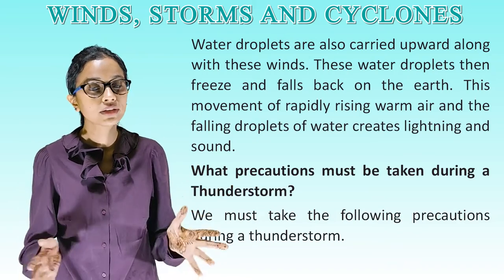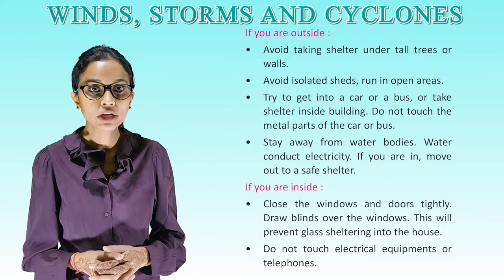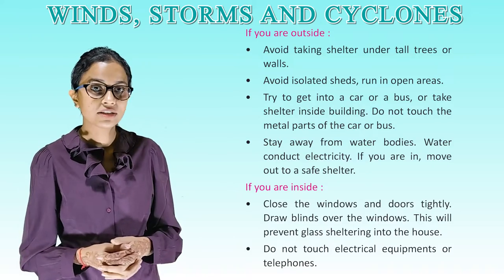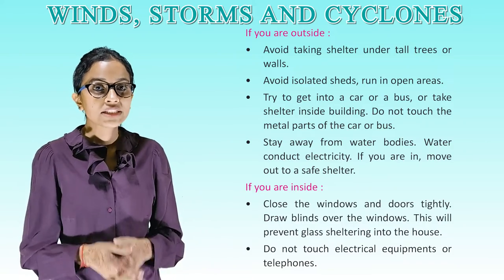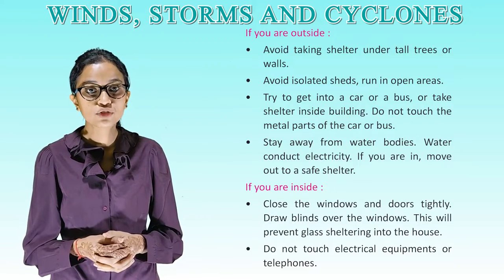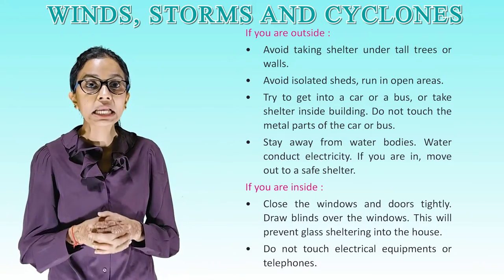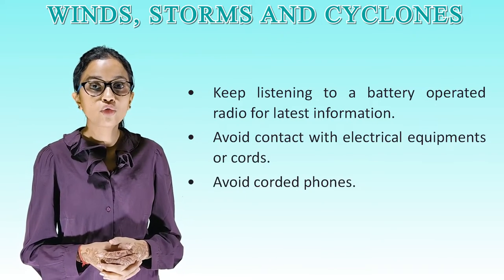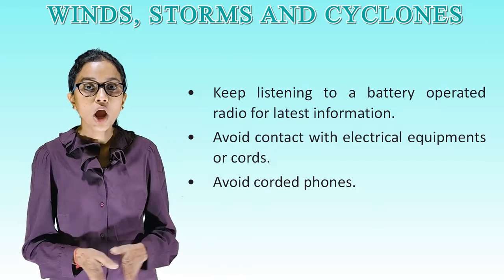What precautions must be taken during a thunderstorm? If you are outside, avoid taking shelter under tall trees or walls. Avoid isolated sheds or open areas. Try to get into a car, a bus, or take shelter inside a building. Do not touch the metal parts of a car or bus. Stay away from water bodies as water conducts electricity. If you are inside, close the windows and doors tightly and draw blinds over the windows to prevent glass shattering into the house. Do not touch electrical equipment or telephones. Keep listening to a battery-operated radio for latest information. Avoid contact with electrical equipment, cords, and corded phones.